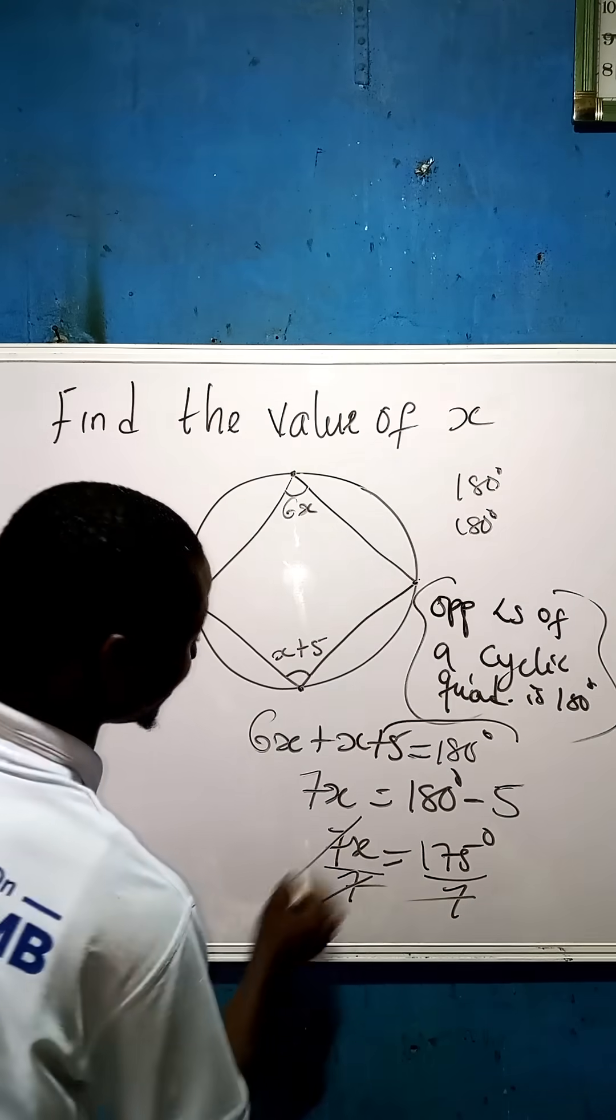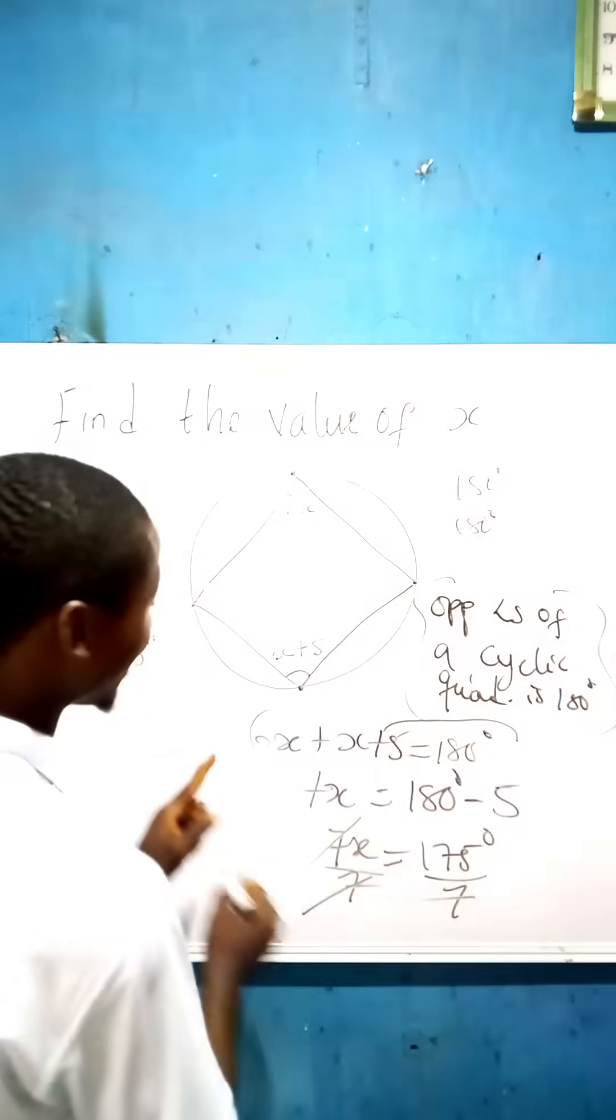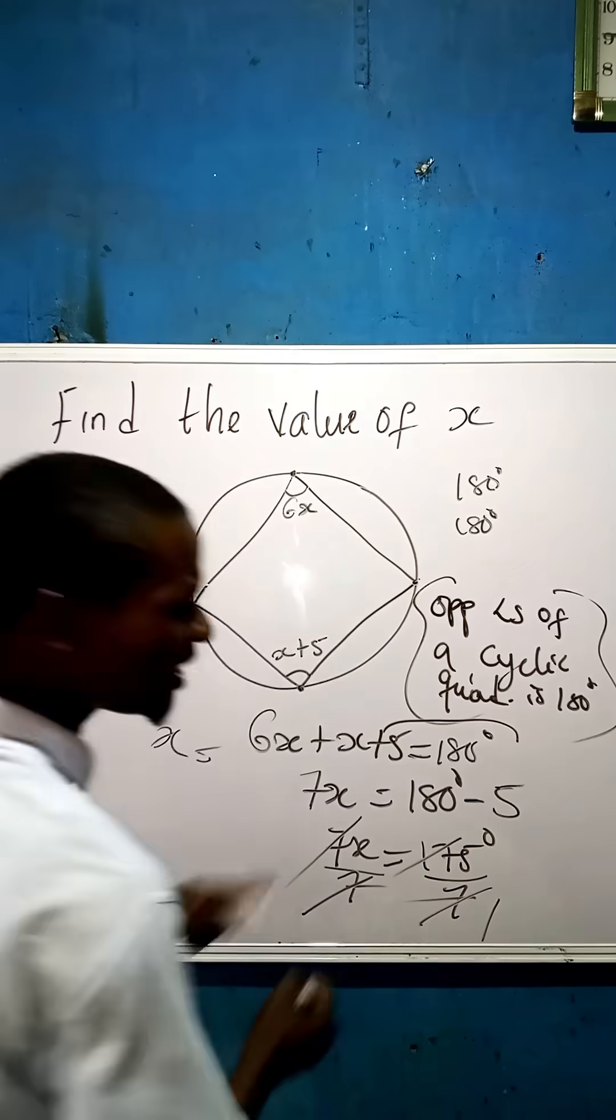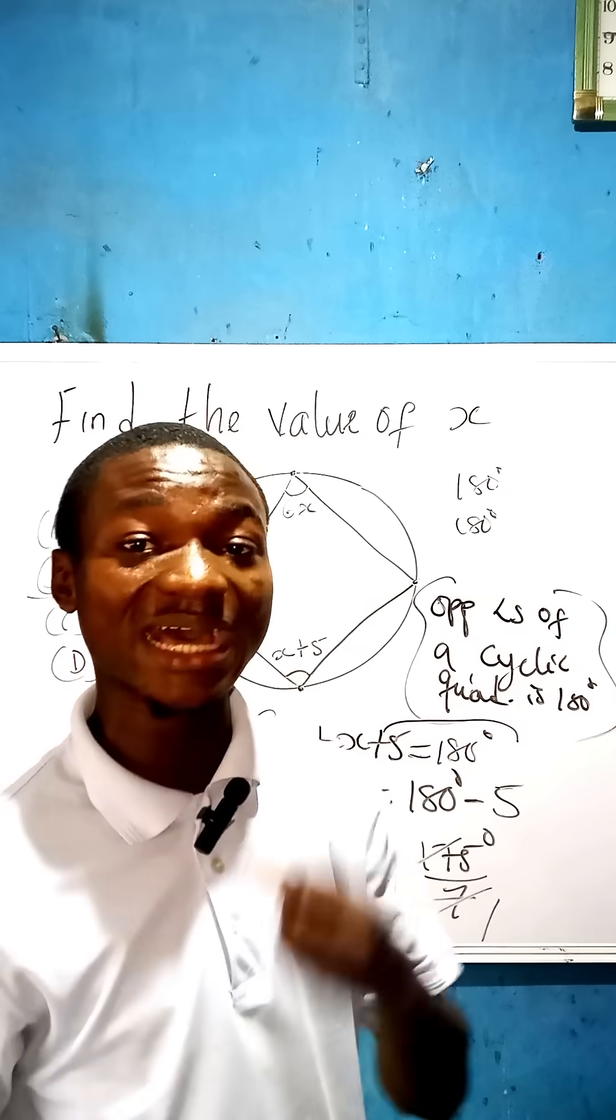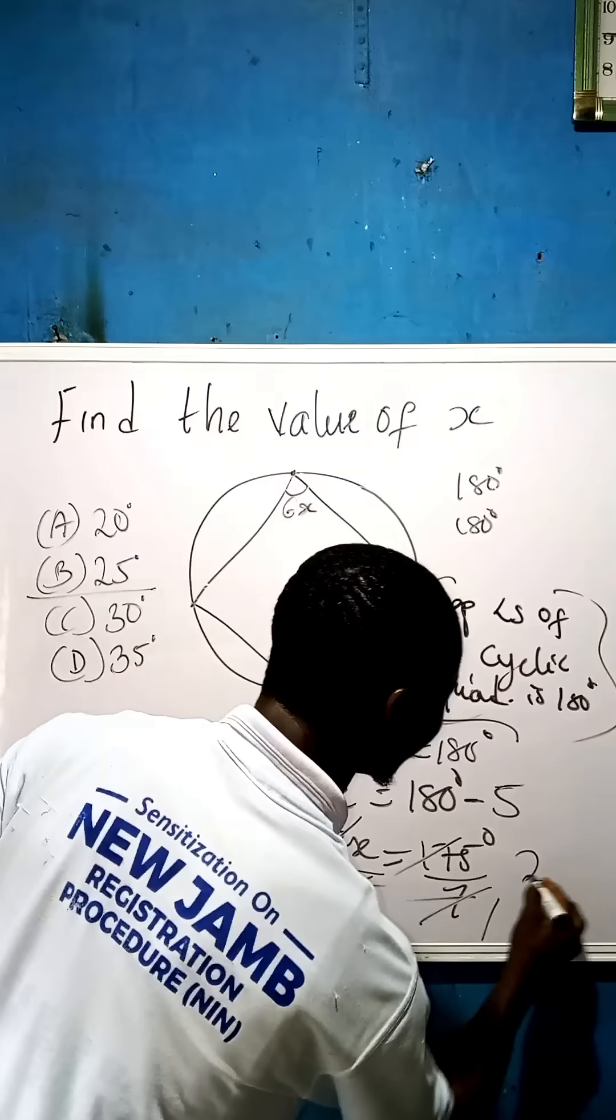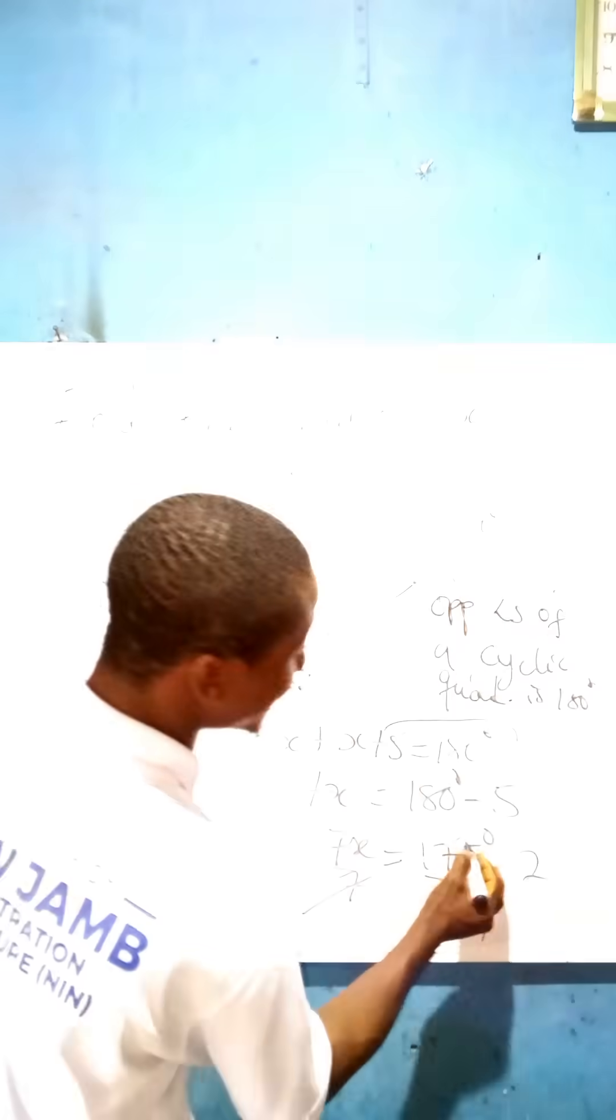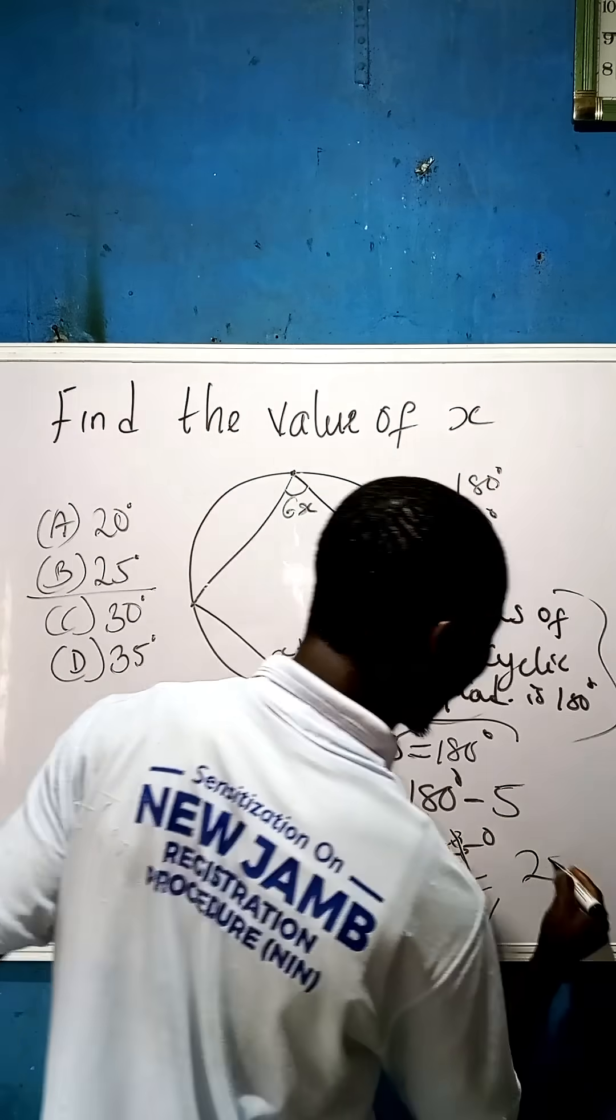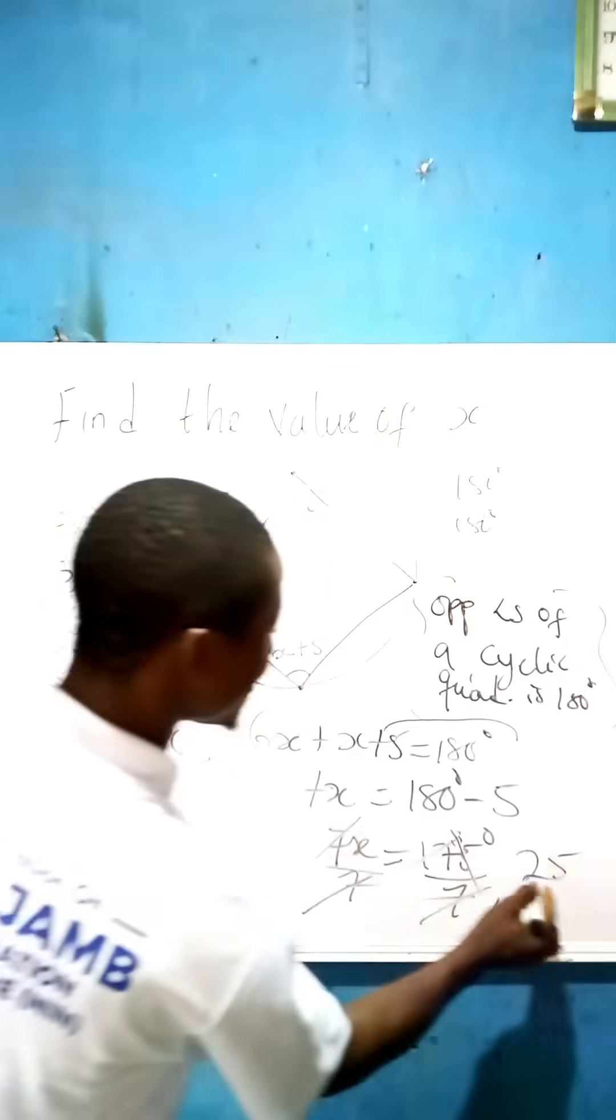So that 7 will strike out this 7, because it's blocking the x. And x is now going to be equal to - 7 in 17 is 2 remainder 3. We write our 2, then remainder 3 add it up to this 5 here, which gives us 35. Now 7 in 35 is 5. We are now left with 25.